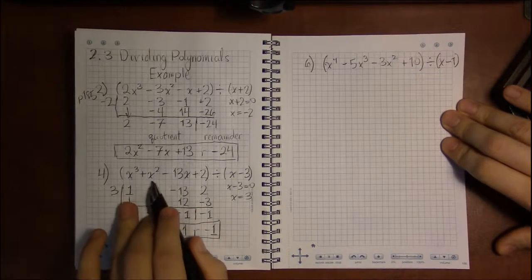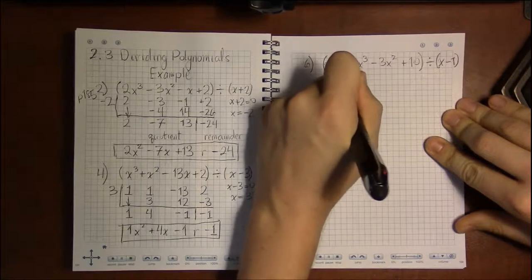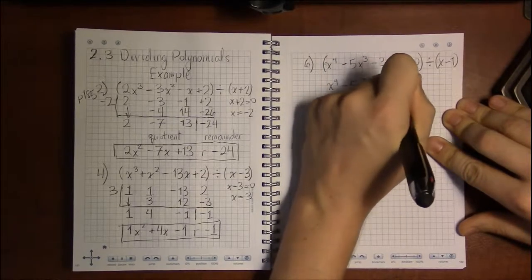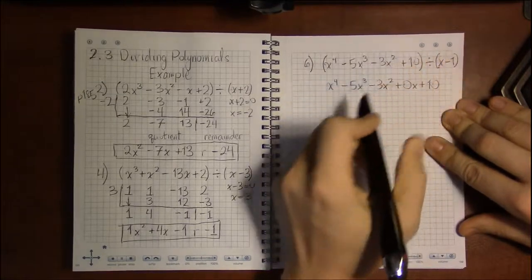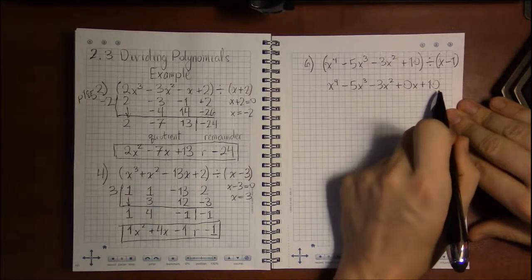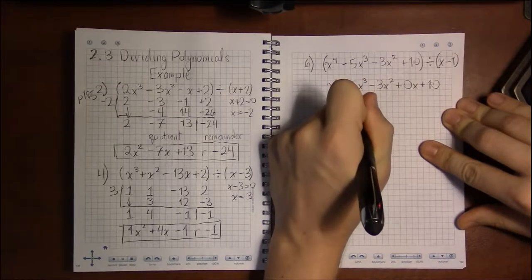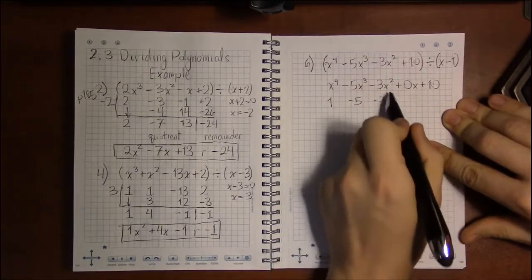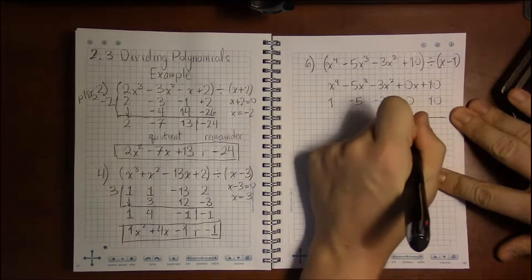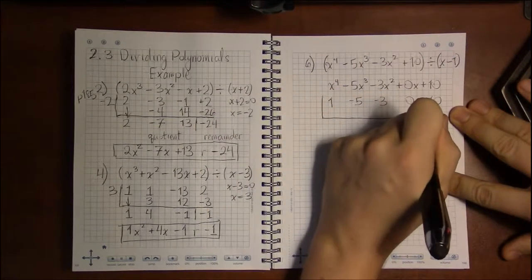In problem 4, there was an x cubed, x squared, an x term, and a constant. The way you deal with a missing term is to think of it as having a coefficient of 0. So we think of this polynomial as x to the 4th minus 5x cubed minus 3x squared plus 0x plus 10. Our coefficients are 1, minus 5, minus 3, 0, and 10. You have to include these placeholder zeros, otherwise everything will be messed up.